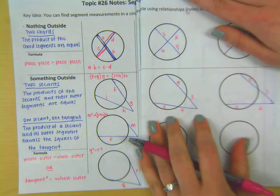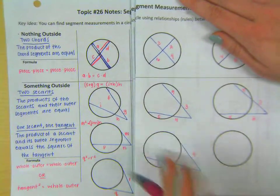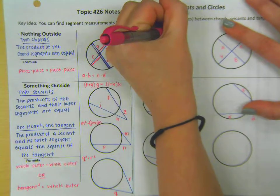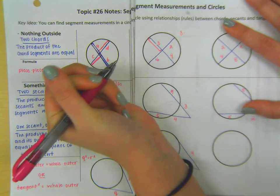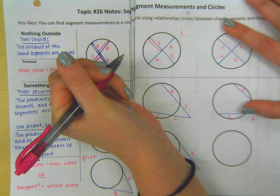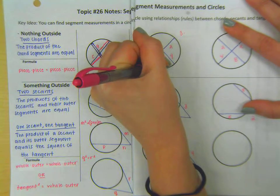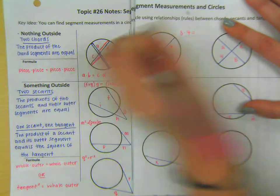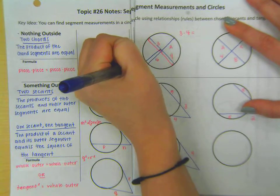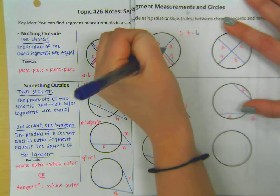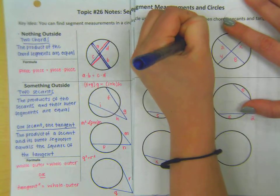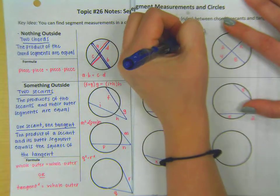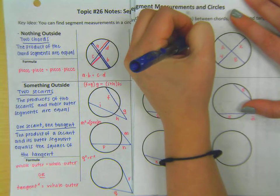Let's look at some examples. For this first one, we have segments of 3 and 4 on one chord, and 6 and 2 on the other chord. We multiply the pieces of the same chord together: 3 times 4 equals 6 times 2. In the end, twelve equals twelve.